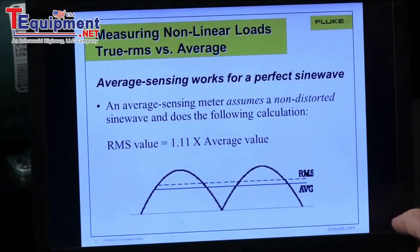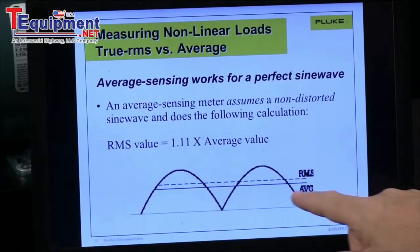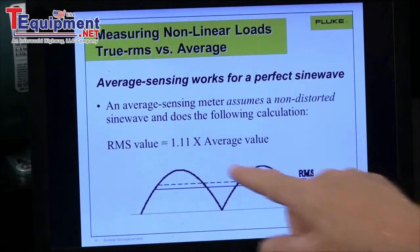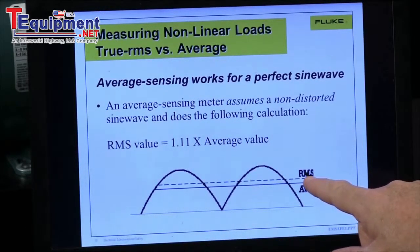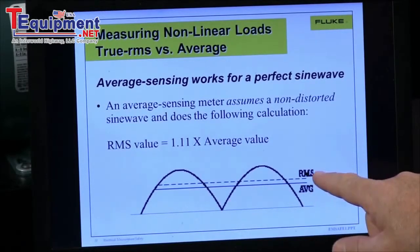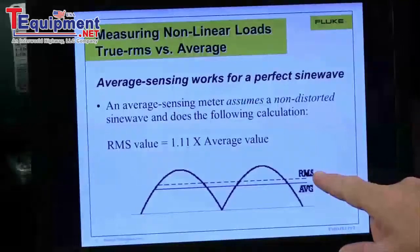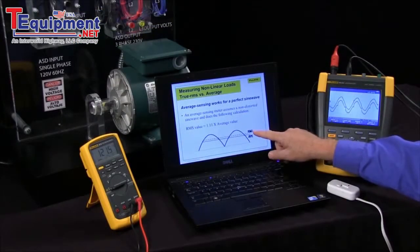If we use an average responding meter, what it does is it takes the average of a signal, multiplies it by 1.111, and then displays the RMS. So it's actually average sensing RMS display. This was fine when we had a world of nothing but linear loads.